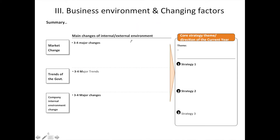In this slide, we'll see how the business environment and other factors are changing. You can analyze three factors: market change, government trends and regulations, and your internal environment. Write three to four changes. For example, Starbucks has entered into the bakery business, or there are regulatory changes by the government. You can also write internal changes — for example, some employees have left your company or there's a cash problem. Then write how these factors affect your current year strategies and how you would like to adjust them.